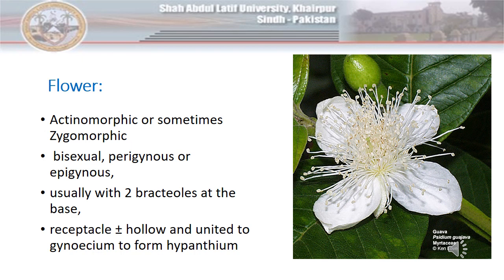Most of the flowers are actinomorphic in their symmetry, which means flowers can be divided into equal halves when cut along any vertical plane. However, zygomorphic flowers are also present in members of the family. The flowers are bisexual, having both androecium and gynoecium in the same flower. The flowers are epigynous or perigynous, which defines the position of the ovary in relation to the other floral parts on the thalamus.